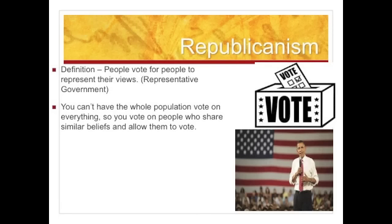Where popular sovereignty is the act of voting for elected officials, republicanism is the idea that we vote for people to run the government for us. We pick people who have similar opinions and views to ourselves and who we feel will best represent us. You can't have the whole population voting on everything — it would get too sloppy — so we hire people to represent us at both the state and federal level.